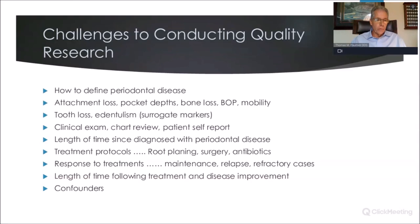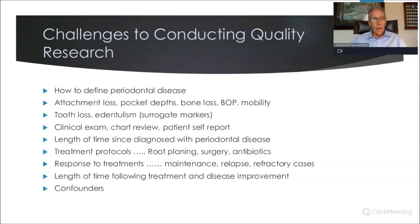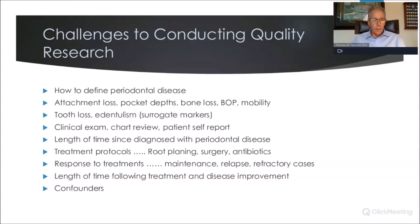Or do we use surrogate markers such as tooth loss and edentialism — the final stage of periodontal disease — which may not be accurate since we lose teeth for a variety of reasons beyond periodontal disease? Is there a clinical exam done by calibrated examiners, or is it simply a chart review? Or do we rely on patient self-report? And how long has it been since periodontal disease was diagnosed? What were the treatment protocols — root planing, surgery, antibiotics? What was the patient's response, and did they comply with maintenance or have relapse? All of these are challenges to research, and there is no standardization within this.